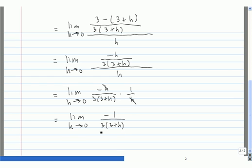Now we can evaluate this limit by substitution. If we plug in 0 for h, we get -1 divided by 3(3+0), which equals -1/9.